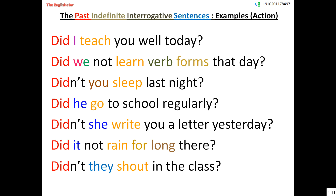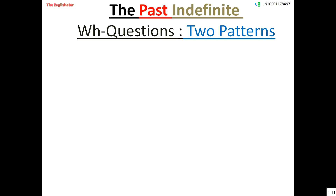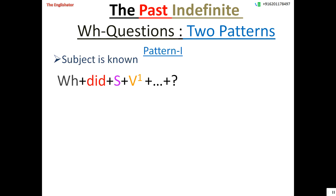Now let us see how to make WH-word type questions. As I discussed with the present indefinite tense — the link to that video is in the description box — such WH-word questions follow two patterns. In Pattern 1, where the subject is available, the formula is: WH word + did + subject + V1 + additional words + question mark.